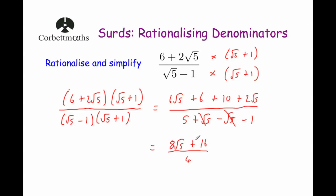So we have 8 root 5 plus 16 over 4. Both 8 root 5 and 16 are multiples of 4, so we can divide both by 4. 8 root 5 divided by 4 is 2 root 5, and 16 divided by 4 is 4. So the answer is 2 root 5 plus 4. The denominator is not only rationalized but it's 1 — there's no denominator anymore. It's just 2 root 5 plus 4. We started with something quite complicated, 6 plus 2 root 5 over root 5 subtract 1, and it simplified beautifully.